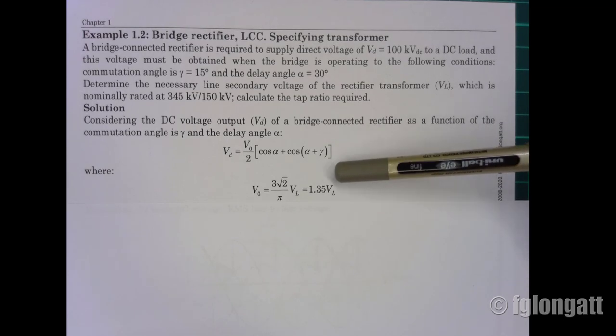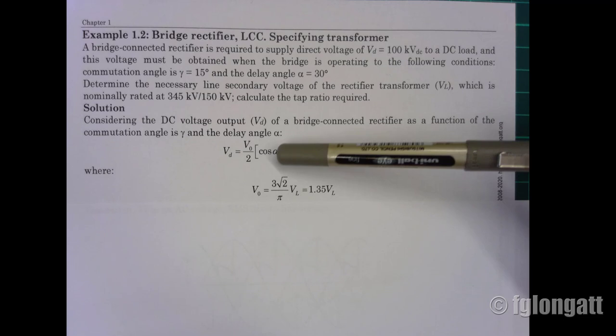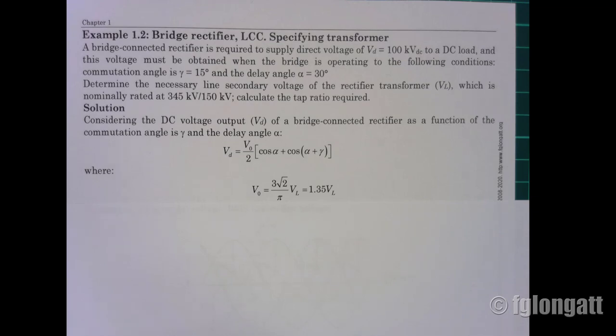Three times square root 2 divided by pi, multiplied by VL. What is VL? VL is the line-to-line RMS voltage that we supply to the rectifier.